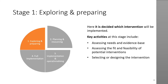Stage one is exploring and preparing. In this stage, it's decided which intervention would be implemented. Spend time assessing the needs of those affected, as this is a key decision-making phase. Build a supportive climate and identify champions who will drive the change. Activities include assessing needs, looking at the evidence for the intervention, assessing fit, feasibility and appropriateness, assessing implementation readiness, developing leadership, stakeholder engagement to secure buy-in, selecting or designing the intervention, and identifying outcomes.